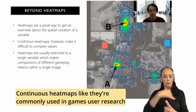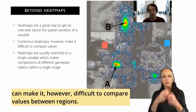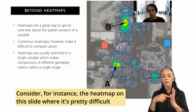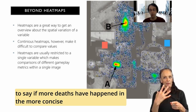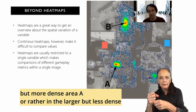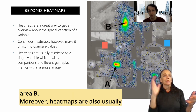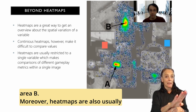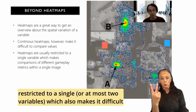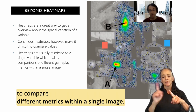Continuous heatmaps, like they are commonly used in games user research, can make it however difficult to compare values between regions. Consider for instance the heatmap on this slide, where it's pretty difficult to say if more deaths have happened in the more concise but more dense area A or rather in the larger but less dense area B. Moreover, heatmaps are also usually restricted to a single or at most two variables, which also makes it difficult to compare different metrics within a single image.